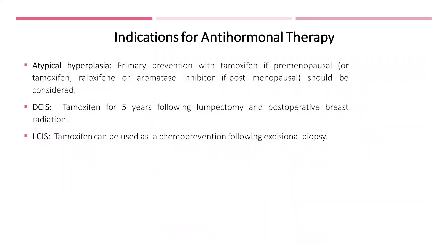Here we have summarized the main indications for anti-hormonal therapy. Currently, primary prevention with tamoxifen — if the woman is pre-menopausal — or tamoxifen, raloxifene, or an aromatase inhibitor — if the woman is post-menopausal — should be considered in the case of atypical hyperplasia. In the case of DCIS, ductal carcinoma in situ, tamoxifen can be used for 5 years following lumpectomy and post-operative breast radiation. For lobular carcinoma in situ, tamoxifen can be used as chemoprevention following excisional biopsy.